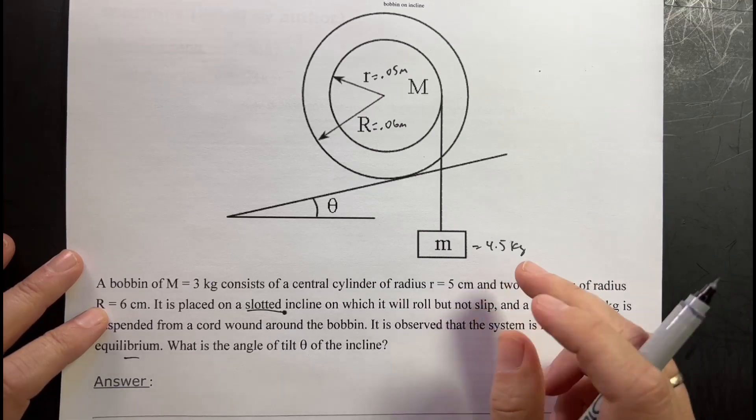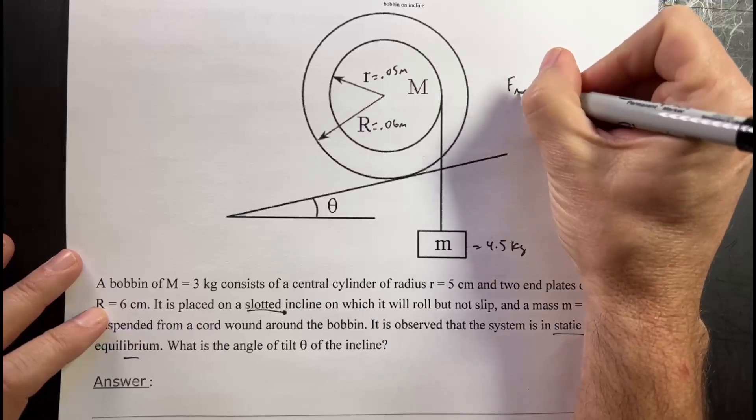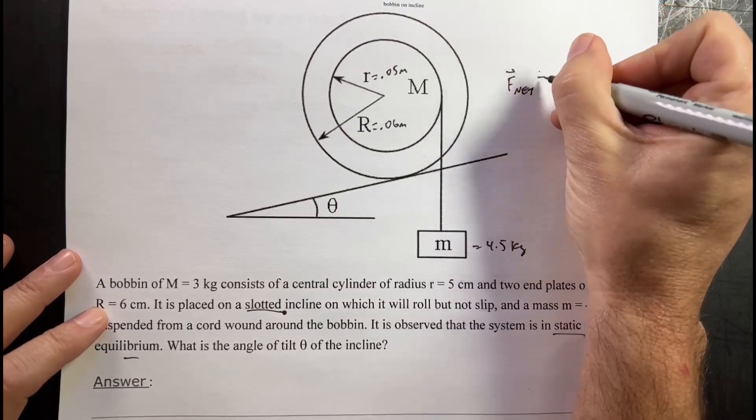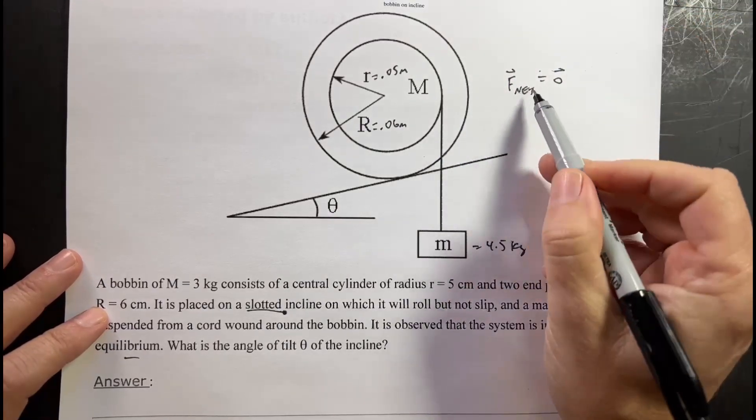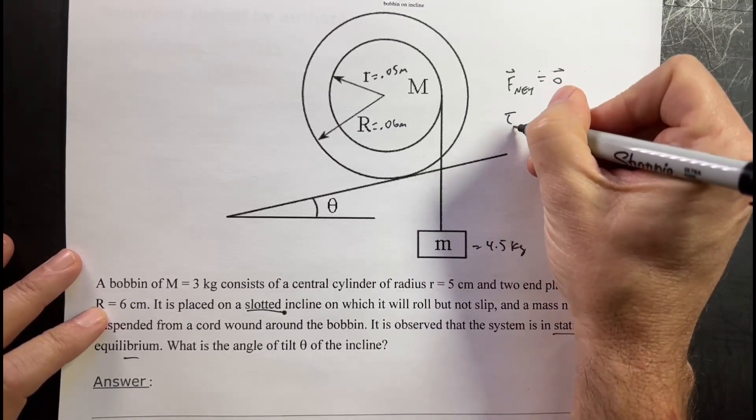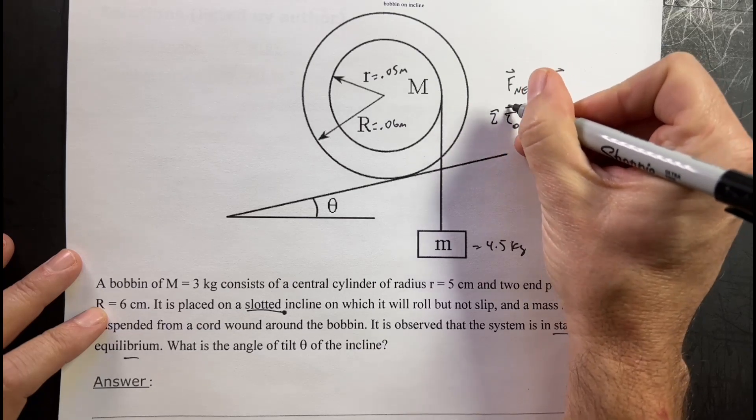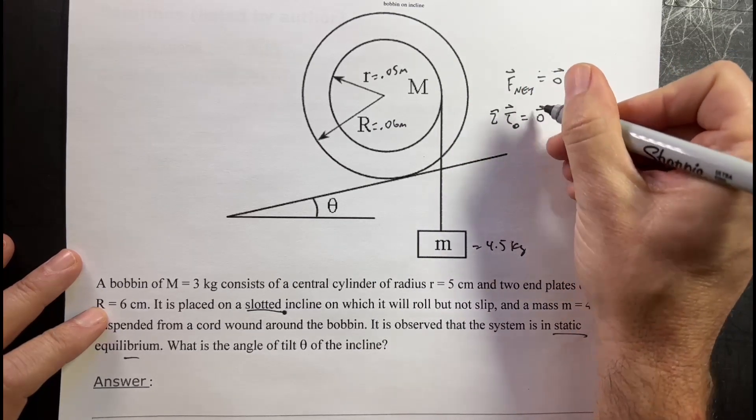So when we see static equilibrium, we should immediately think about the following two equations should be true. F net equals 0. The total force has to be 0. And then torque net about some point is also 0.